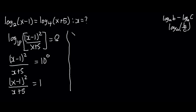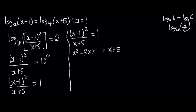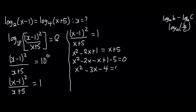So x minus 1 all squared divided by x plus 5 equals 1. Expanding the numerator, we get x squared minus 2x plus 1 equals x plus 5 after cross multiplying. This is a quadratic equation since the highest exponent of x is 2. Grouping like terms by transposing: x squared minus 2x minus x plus 1 minus 5 equals zero, giving us x squared minus 3x minus 4 equals zero.